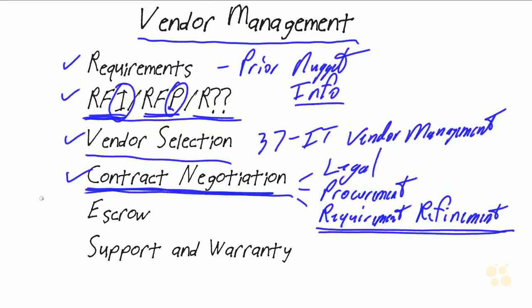I'm deliberately using the word refinement because it shouldn't be a significant change, but we're going to eventually be testing this. We're going to put all of this into the requirements traceability matrix that we will discuss in the next nugget. We need to make sure that we are absolutely aware of all these refinements so that we can properly test it and go forward. So there needs to be significant involvement from IT in contract negotiations. It's not just legal and procurement — the project needs to be there as well.